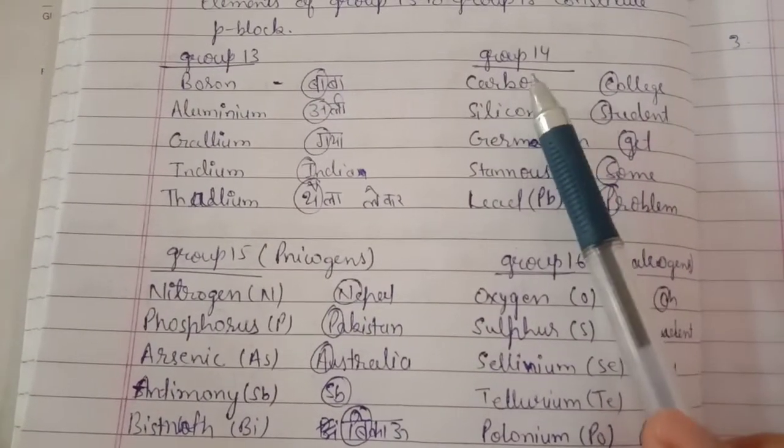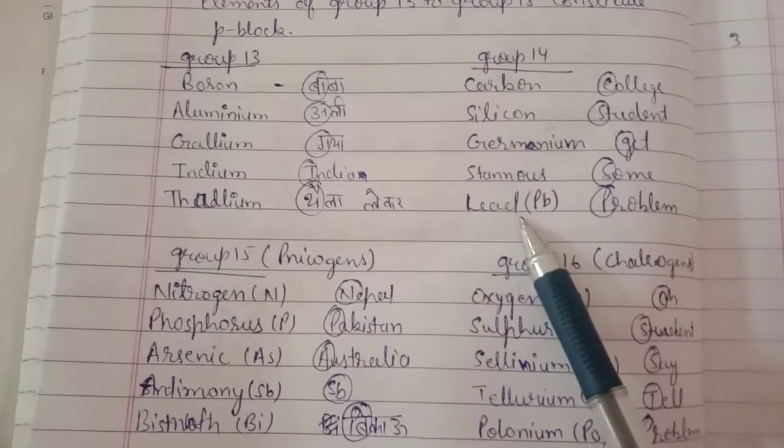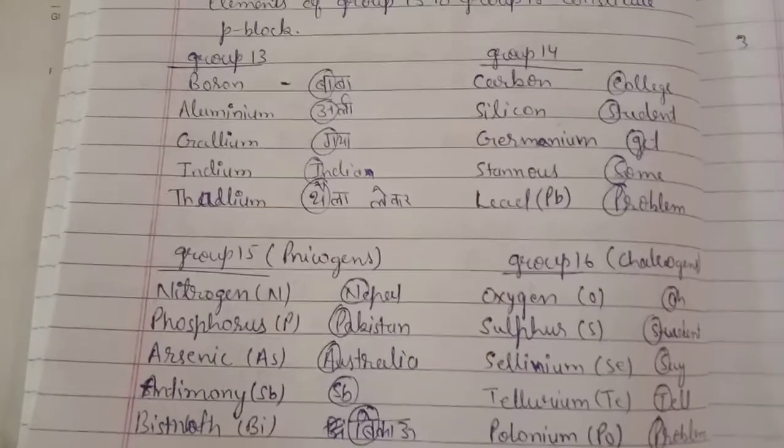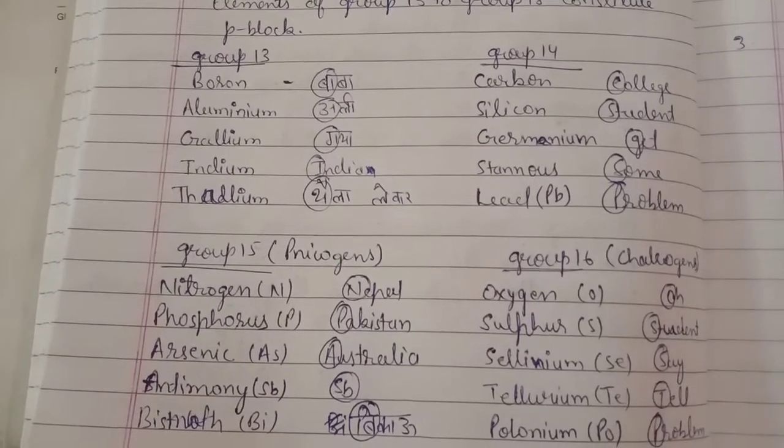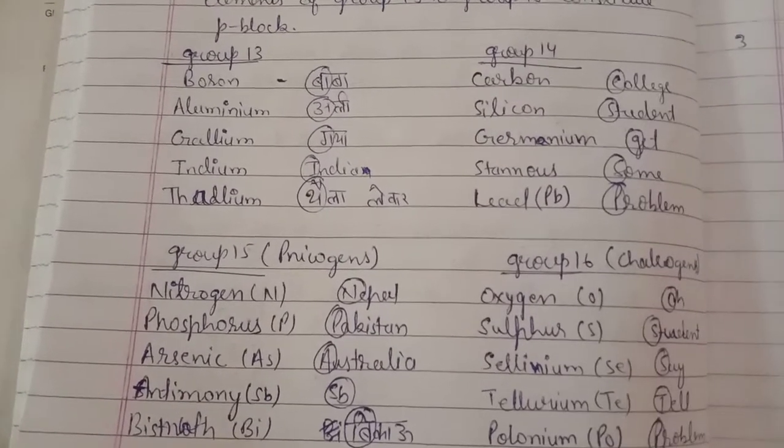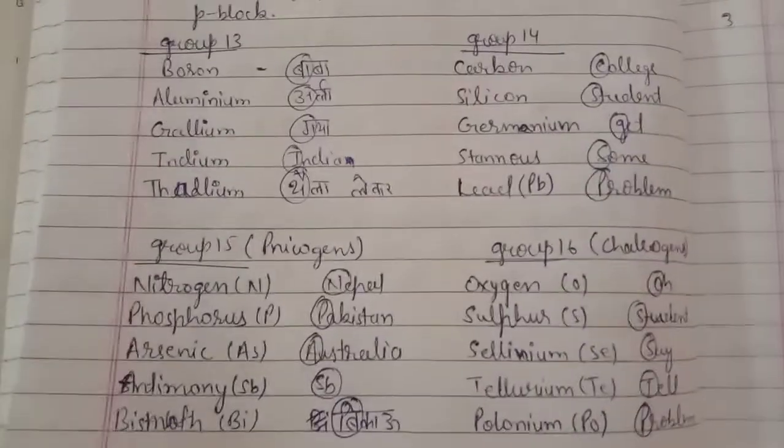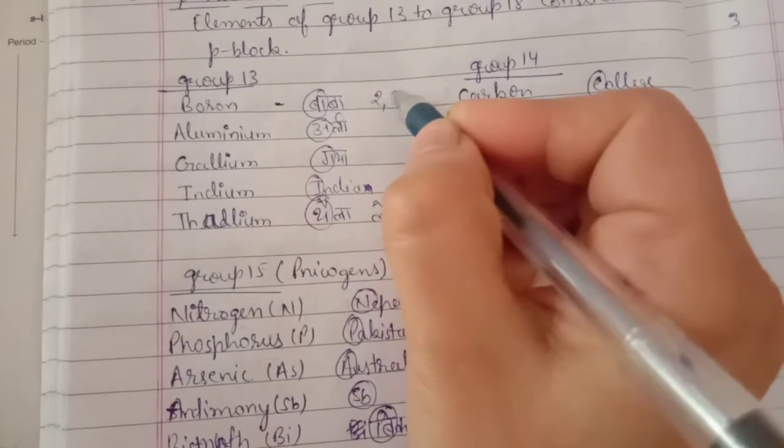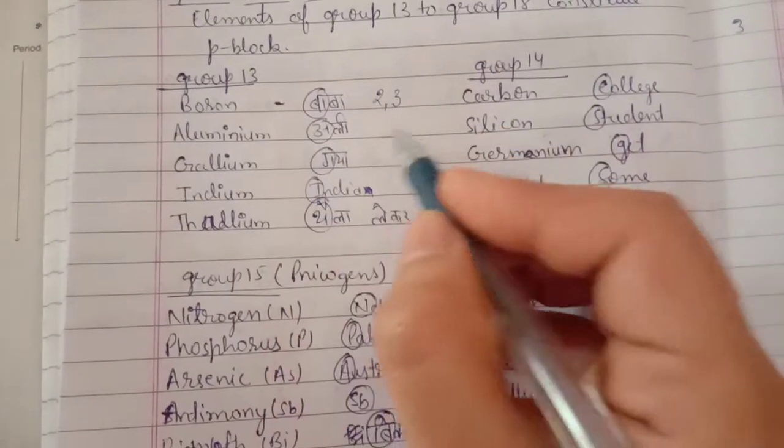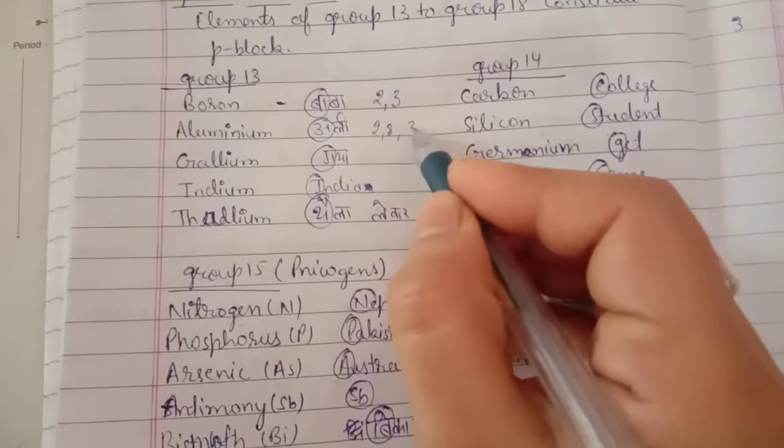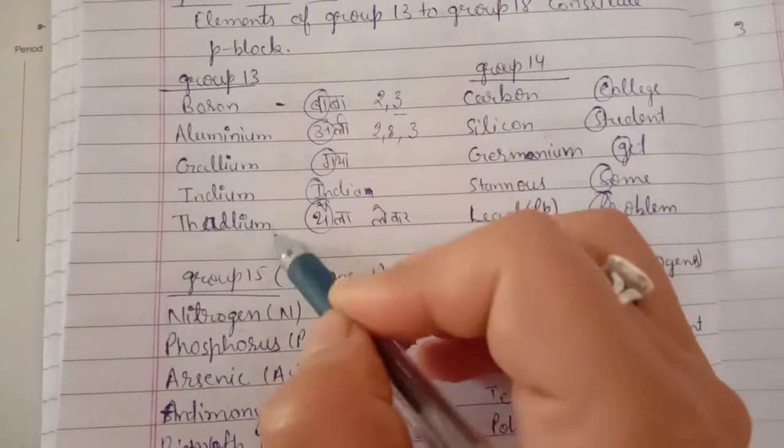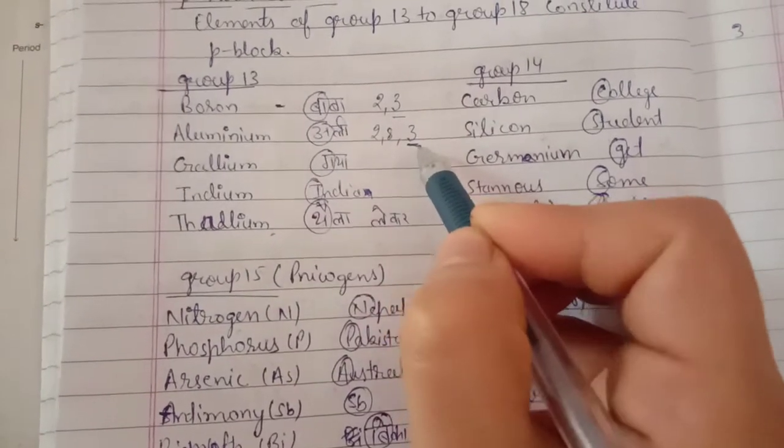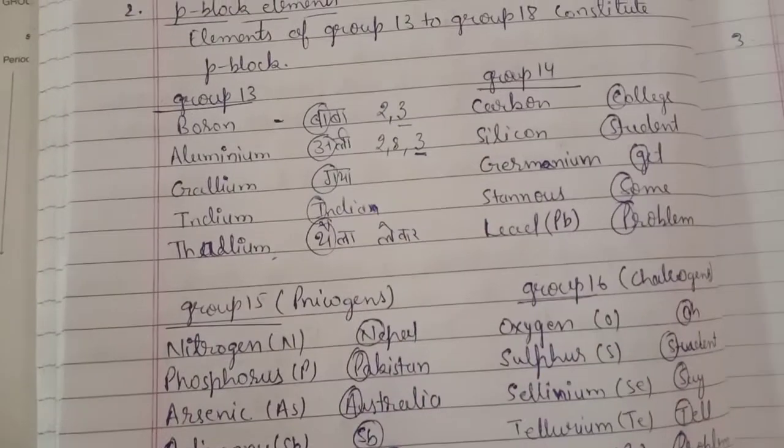Group number 14 contains carbon, silicon, germanium, tin (stannus), and lead. As we discussed earlier, why are elements placed in one group? Elements are placed together when their outermost configuration is the same. Boron's atomic number is 5, so according to Bohr's model, it's 2,3. Aluminium is 13, so it's 2,8,3. In this group, all elements have 3 electrons in their outermost shell. That's why they are paired up in the same group.